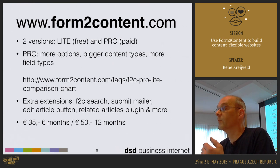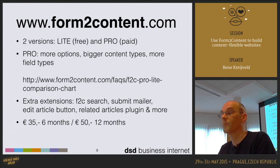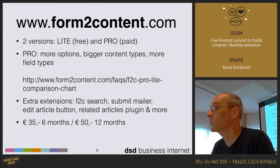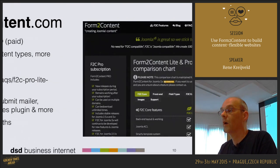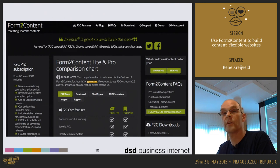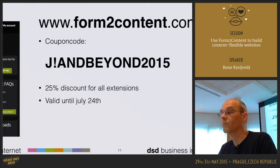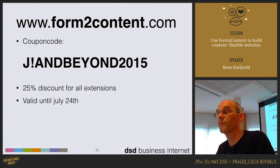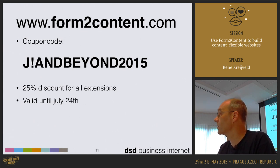Form2Content is available through the website form2content.com. There are two versions: a light and a pro version. The pro version has some extra options, and the pricing is 35 euros for six months and 50 euros for 12 months. On the website there's a big comparison chart between the light and pro versions showing all the differences. There is also a coupon code available for those visiting J and Beyond, giving a 25% discount valid for six weeks after this event.